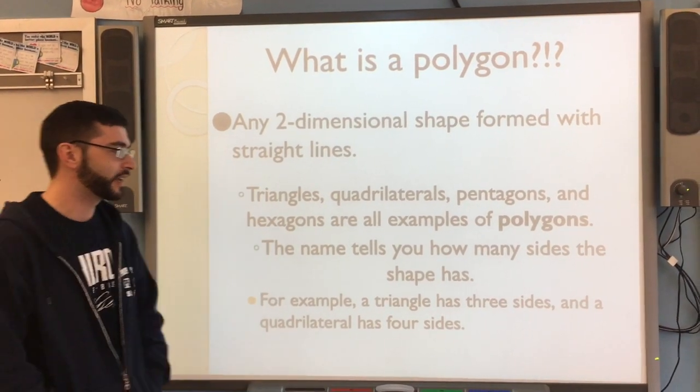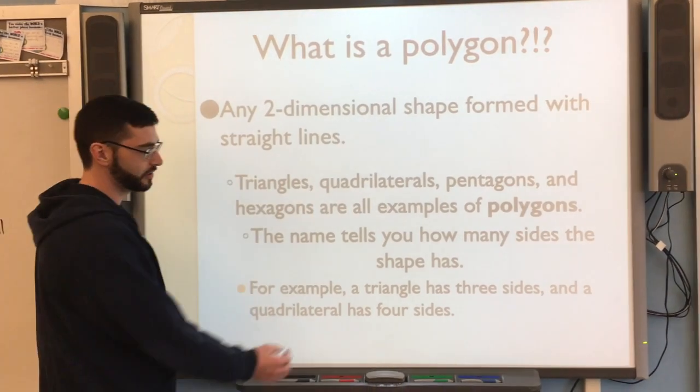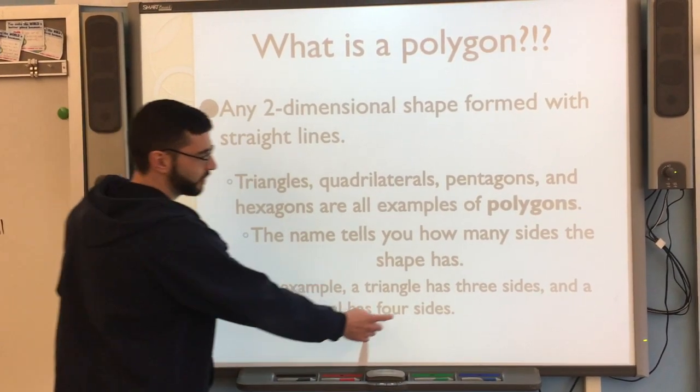For example, a triangle has three sides, and a quadrilateral has four sides. You see here the meaning word tri, saying that there's three, and quad for four.